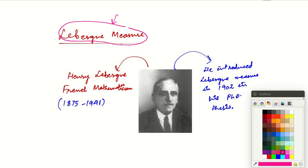So this Lebesgue — this is the name of a French mathematician. Henry Lebesgue, he was a French mathematician from 1875 to 1941. He introduced this concept of Lebesgue measure in his PhD thesis in 1902.